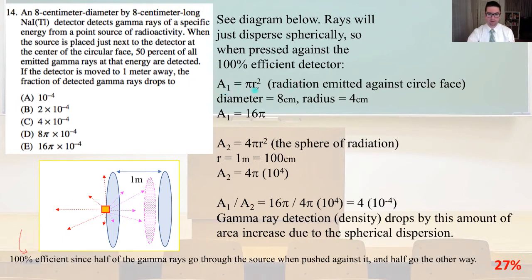A1 equals pi r squared, radiation emitted against the circle face. Diameter equals 8 centimeters, so the radius equals 4 centimeters. A1 equals 16 pi. A2 equals 4 pi r squared, that's our sphere of radiation. R equals 1 meter equals 100 centimeters. A2 equals 4 pi times 10 to the fourth. A1 over A2 equals 16 pi over 4 pi times 10 to the fourth equals 4 times 10 to the minus 4. This is the gamma ray detection density, and it's going to drop by this amount of area increase due to the spherical dispersion. That is answer C.